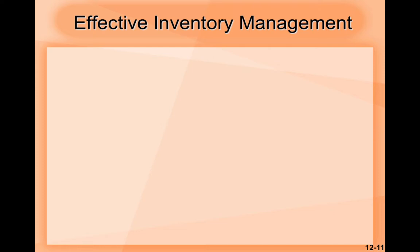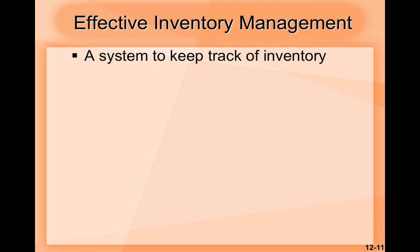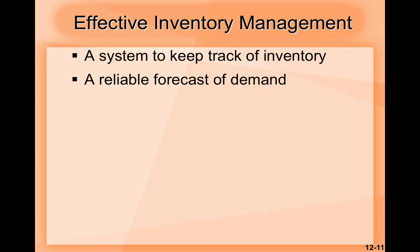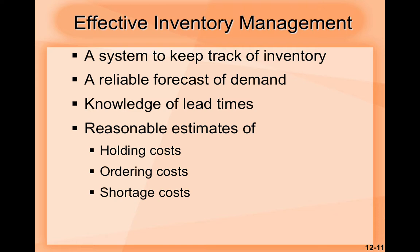For effective inventory management, let's look at some steps. The first point is having a system to keep track of inventory. The second is a reliable forecast of demand, like we saw in the first unit of this quarter. The third is knowledge of lead times. The fourth is reasonable estimates of holding cost, ordering cost, and shortage cost. And finally, the fifth is a classification system.